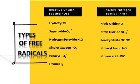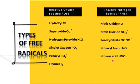Free radicals are atoms or molecules having one or more unpaired electrons in their outer orbital. Therefore, they are very reactive and unstable. There are two types of free radicals: reactive oxygen species and reactive nitrogen species. Reactive oxygen species include hydroxyl, superoxide anion, hydrogen peroxide, singlet oxygen, peroxyl, and ozone. Reactive nitrogen species include nitric oxide, nitrogen dioxide, peroxynitrate, nitroxyl anion, and nitrous acid.